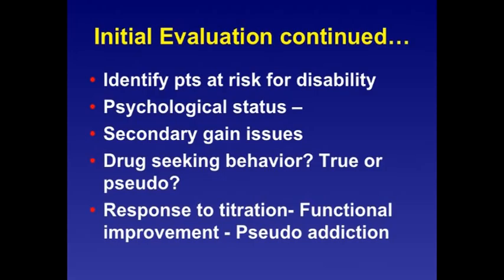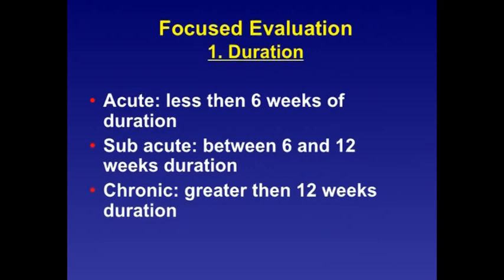The evaluation focuses on identifying the patient's risk for disability, psychological status, secondary gain issues, and drug-seeking behavior, as well as judgment of the pain response to initial titration of medications. This also focuses on functional improvement and considerations for pseudo-addiction issues. The next step is a focused evaluation of the actual pain generator. We can distinguish pain syndromes based on duration: acute is less than six weeks, sub-acute is between six and twelve weeks, and chronic is greater than twelve weeks duration.